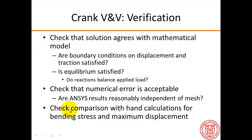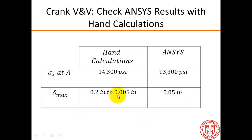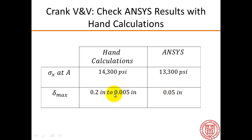The last aspect of verification is comparison with prior hand calculations for bending stress and maximum displacement. The bending stress at A is within about 10% of the hand calculation, and the maximum displacement from ANSYS is in the range predicted from the hand calculation. So that check also seems good.